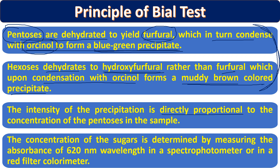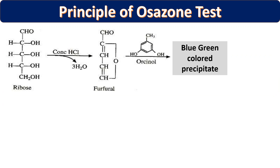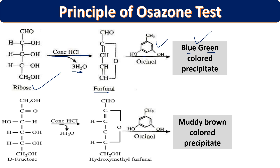If we only visualize the color production, it is a qualitative test. If we measure the optical density of the color and compare it with a known standard, it becomes a quantitative test. First we make a standard graph using different concentrations of pentose sugar, then use the unknown test sample. For example, when ribose sugar is heated with hydrochloric acid, three molecules of water are removed to give furfural.